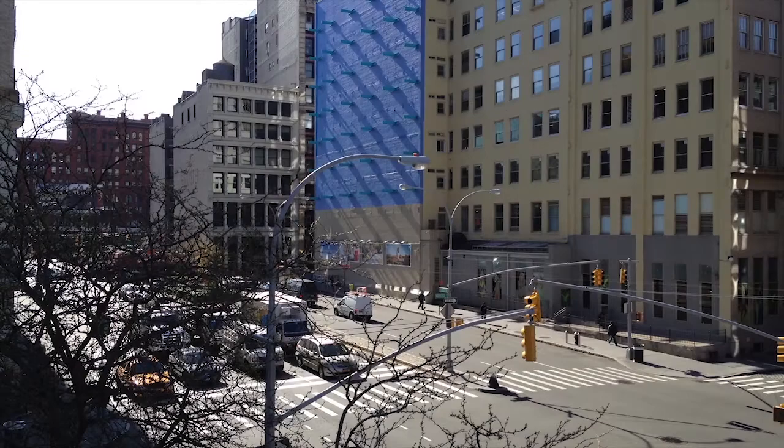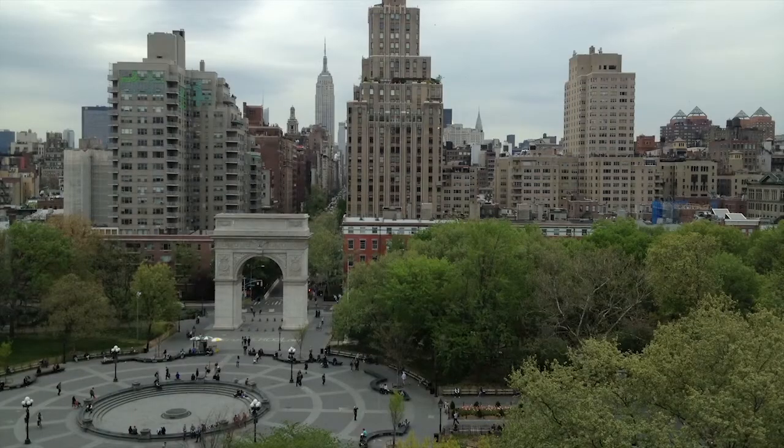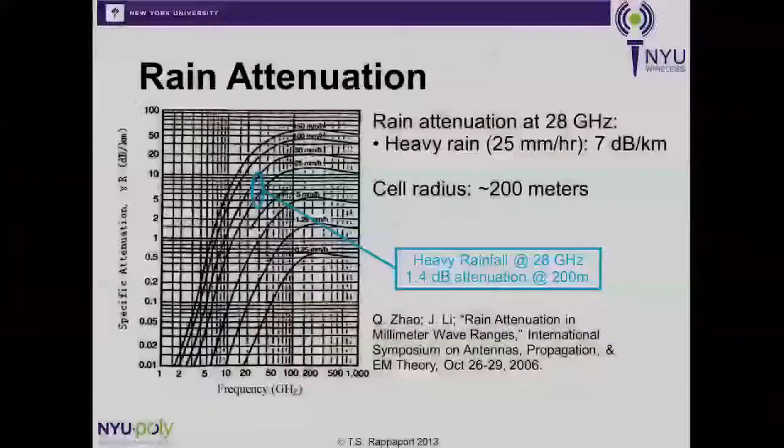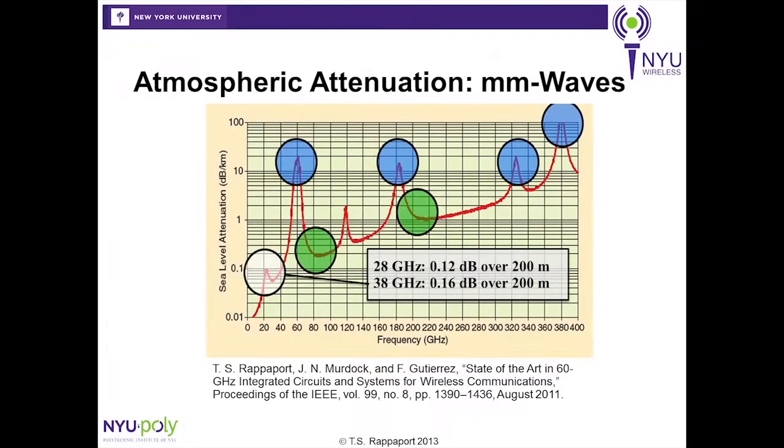Wireless developers must understand and characterize this millimeter wave regime of 28 and 38 GHz radio wave propagation in densely populated urban environments. A common myth among wireless practitioners today is that rainfall and oxygen will attenuate millimeter wave radio frequencies. However, our work and work in the satellite industry have shown that at 28 GHz, neither rainfall nor the atmosphere will greatly attenuate wireless propagation.